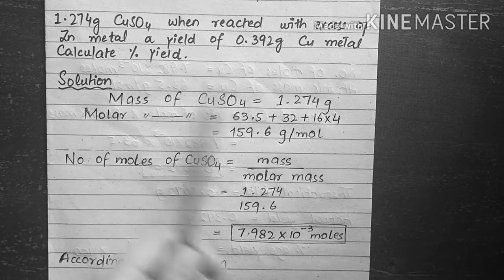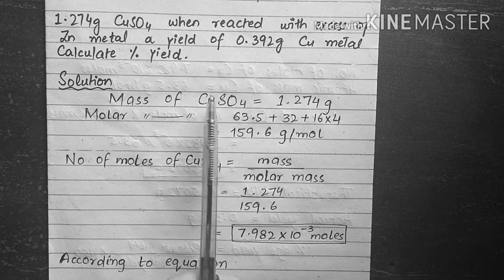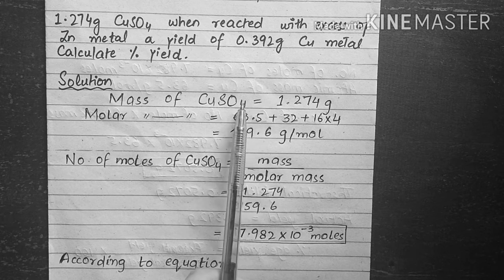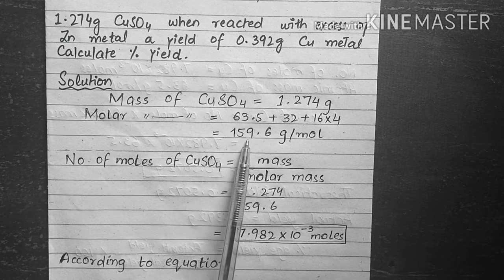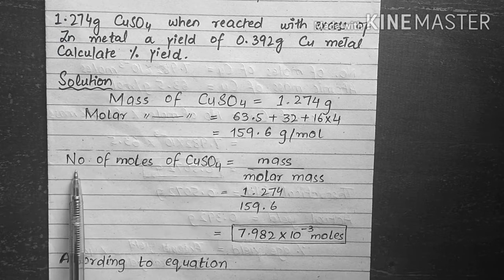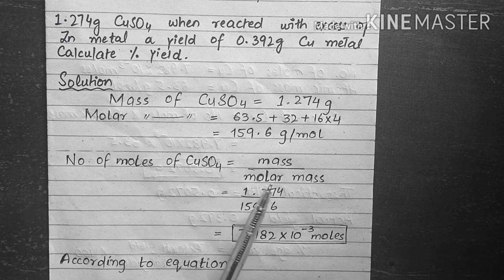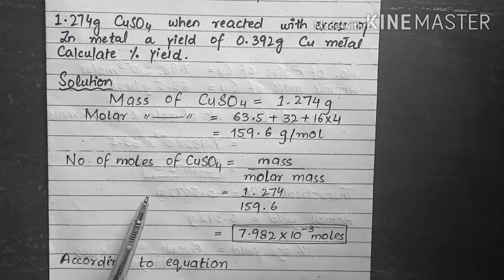The mass of copper sulfate given in the question is 1.247 grams. We calculate the molar mass of copper sulfate from the periodic table: copper is 63.5, sulfur is 32, and oxygen is 16 multiplied by 4, giving 159.6 grams per mole. The number of moles of copper sulfate equals mass divided by molar mass, which gives 7.982 × 10⁻³ moles of copper sulfate.